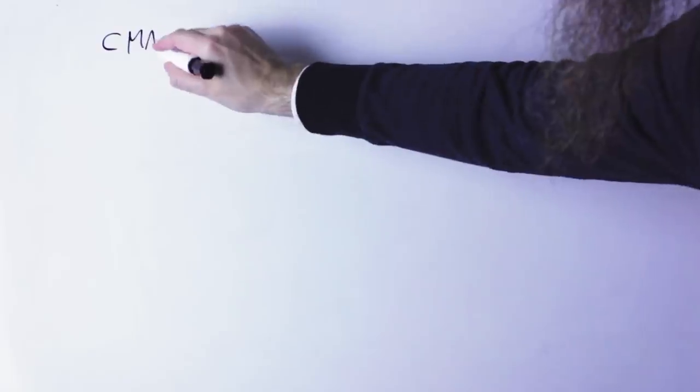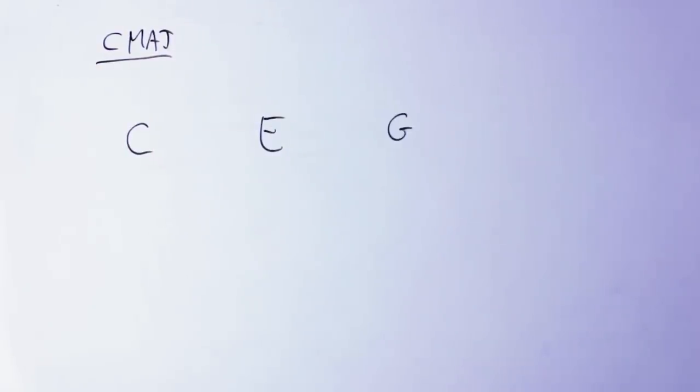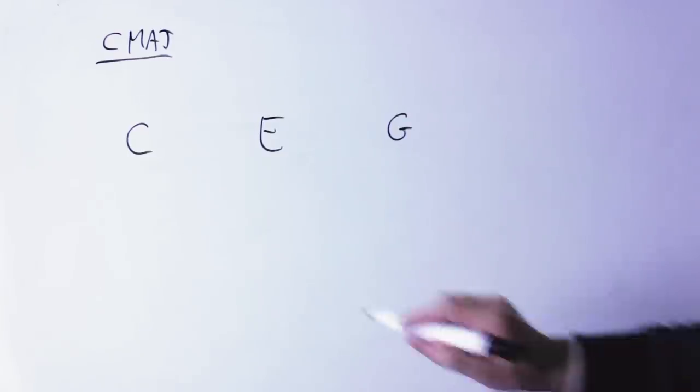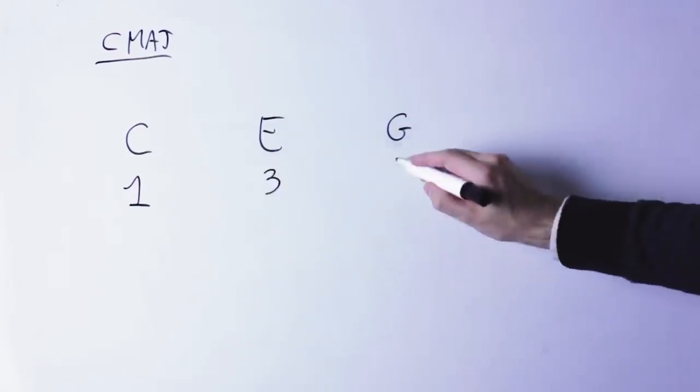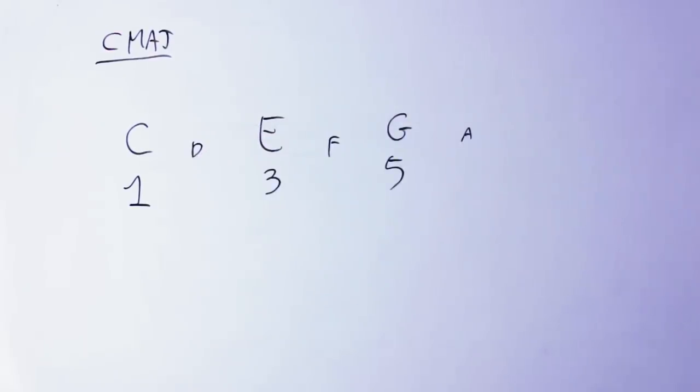So first of all, let's understand what those numbers 9, 11, 13 actually mean. Let's take a major triad and let's do everything in C, shall we? The C major triad is C, E, G. Now normally we would call those notes C, E and G, the root or first, the third and the fifth, and that's because if you write a C major scale,